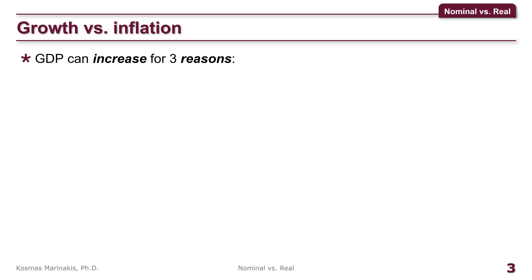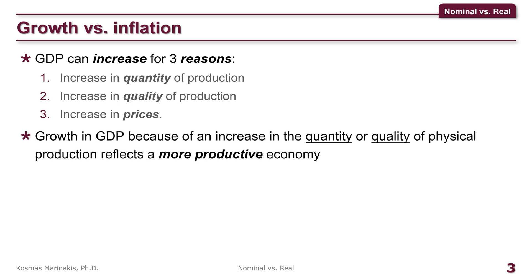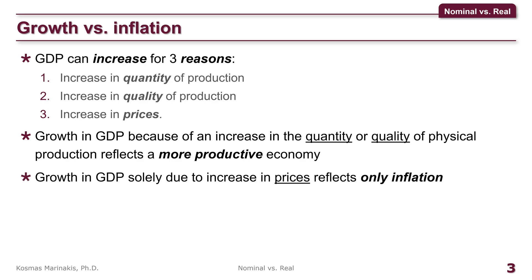GDP can appear increased for three reasons. First, because people produce more goods and services. Or second, because people produce better goods and services. Or third, because the prices of goods and services increase. Now, if the growth of GDP is because of an increase in the quantity or quality of physical output, it reflects an increase in the wealth of people in this country. That's good. If, however, it is solely due to an increase in prices, the change in GDP is only in the number and does not reflect any increase in the real wealth of people.